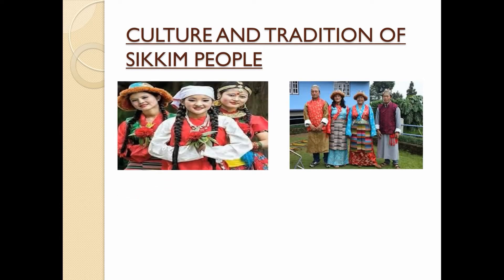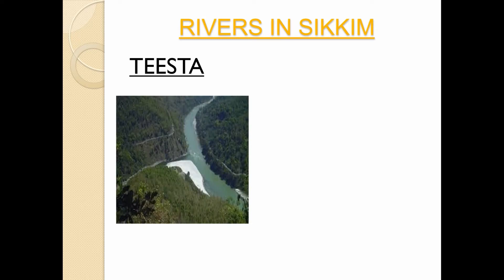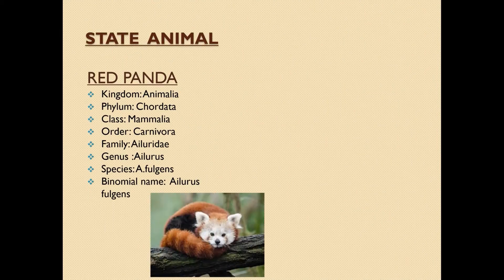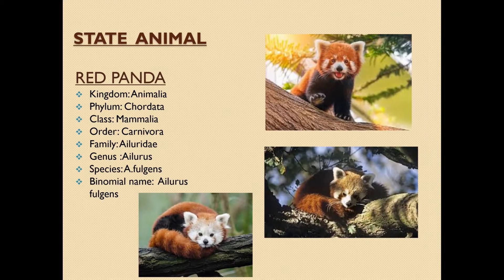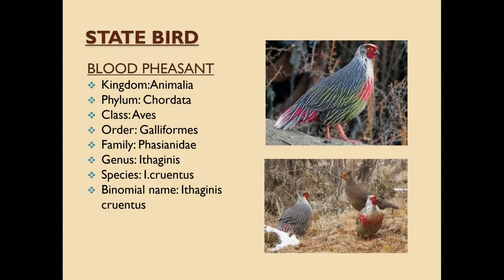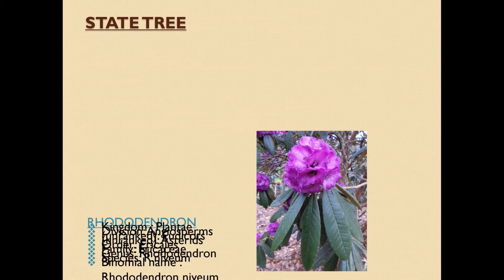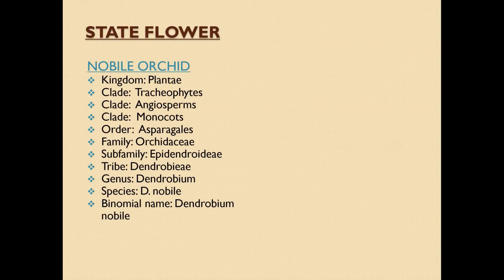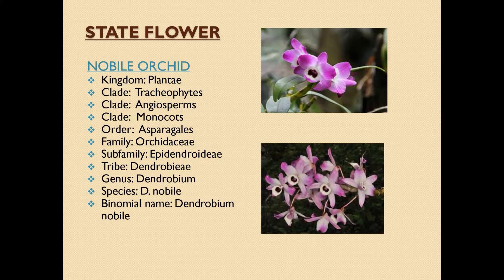This section covers the culture and tradition of Sikkim people and rivers in Sikkim. The state animal is the red panda, the state bird is the blood pheasant — you can take such information from Wikipedia. The state tree is the rhododendron and the state flower is the noble orchid — you can take such images from Google.